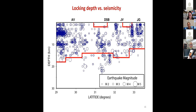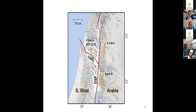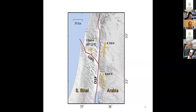Summarizing the tectonics of this area: relative to the southern Sinai Plate, the motion of the Arabia Plate is in the order of 4.7 to 4.8 mm/year. The northern Sinai Plate has an oblique motion of about 0.8 mm/year, parallel to the direction of the Dead Sea Fault, resulting in some opening between the south and north of the Sinai Plate.